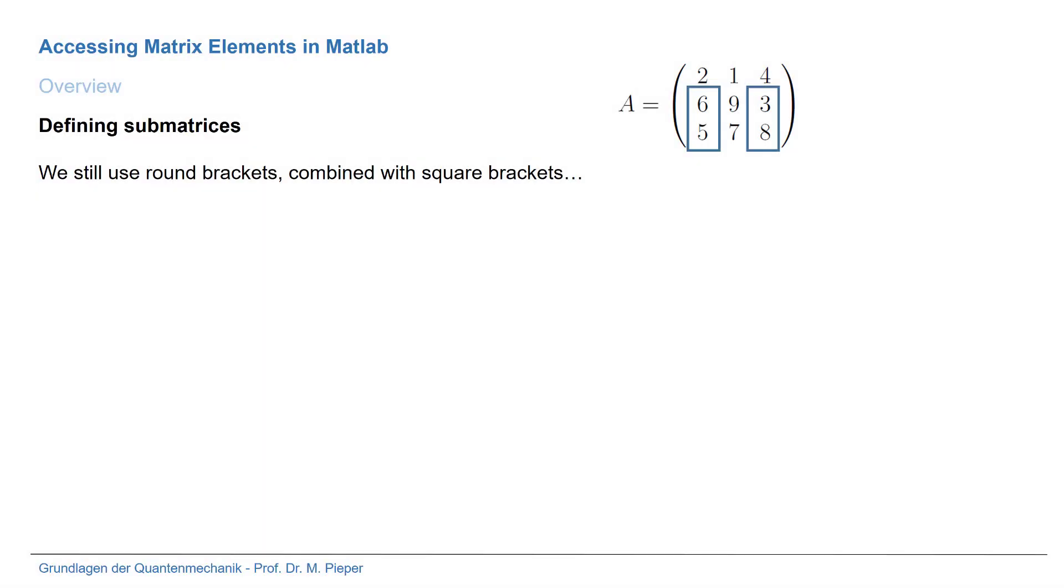So here's the last example. We now want to define a submatrix which consists of two separated parts. So you see the parts are not connected. And in this case we use round brackets and combine them with square brackets. So here is the MATLAB command.